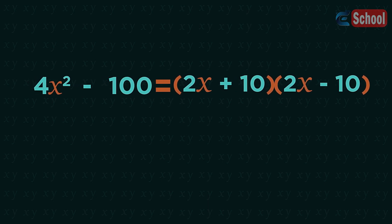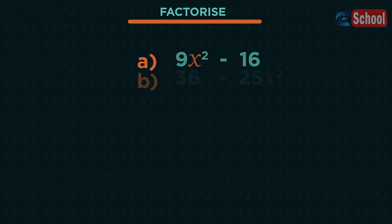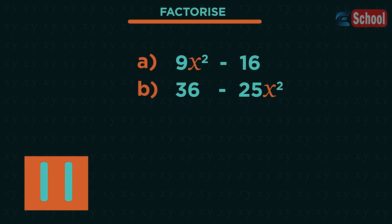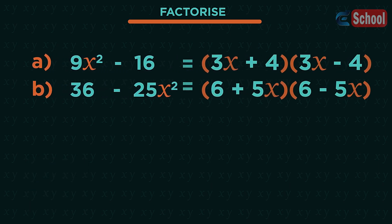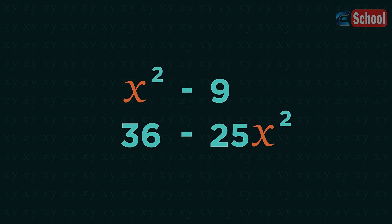Two more questions for you to do. Pause the video, factorize, and click play when you're ready. Did you get them right? So that's the difference of two squares: a squared, x squared, a square number, and a minus.